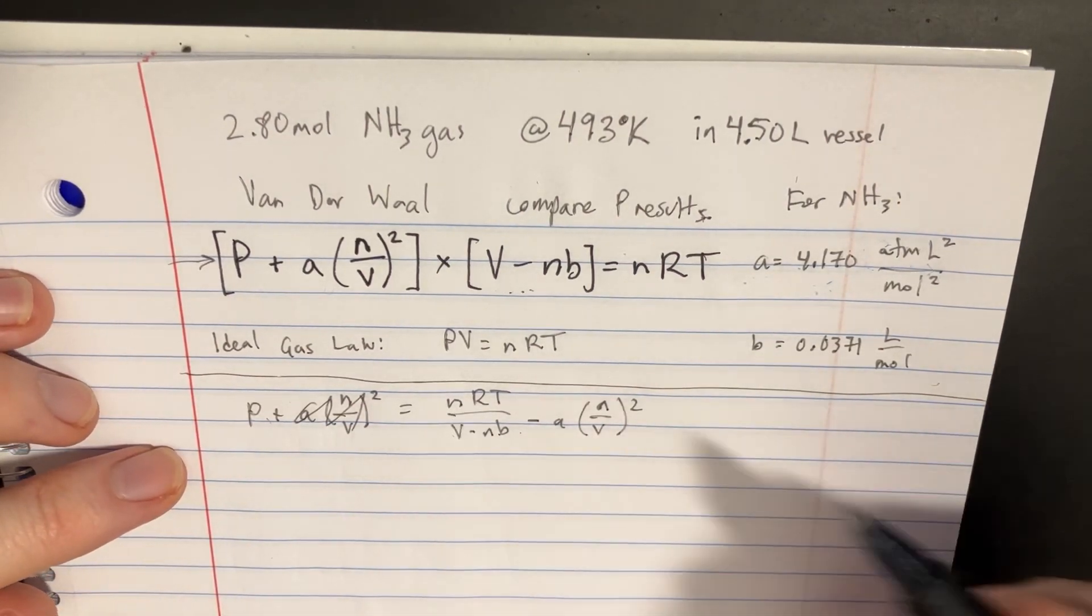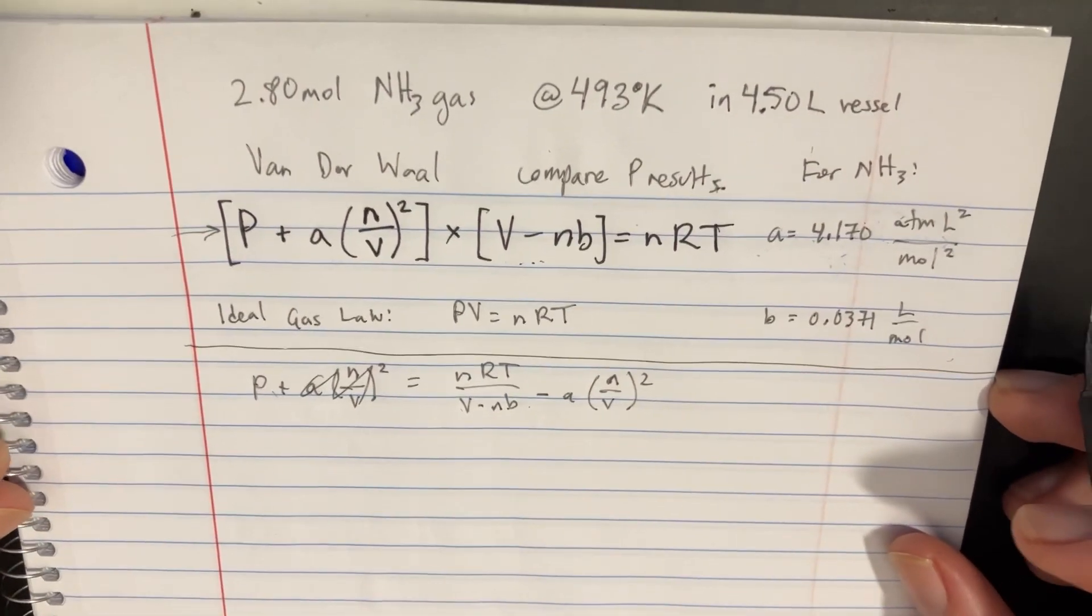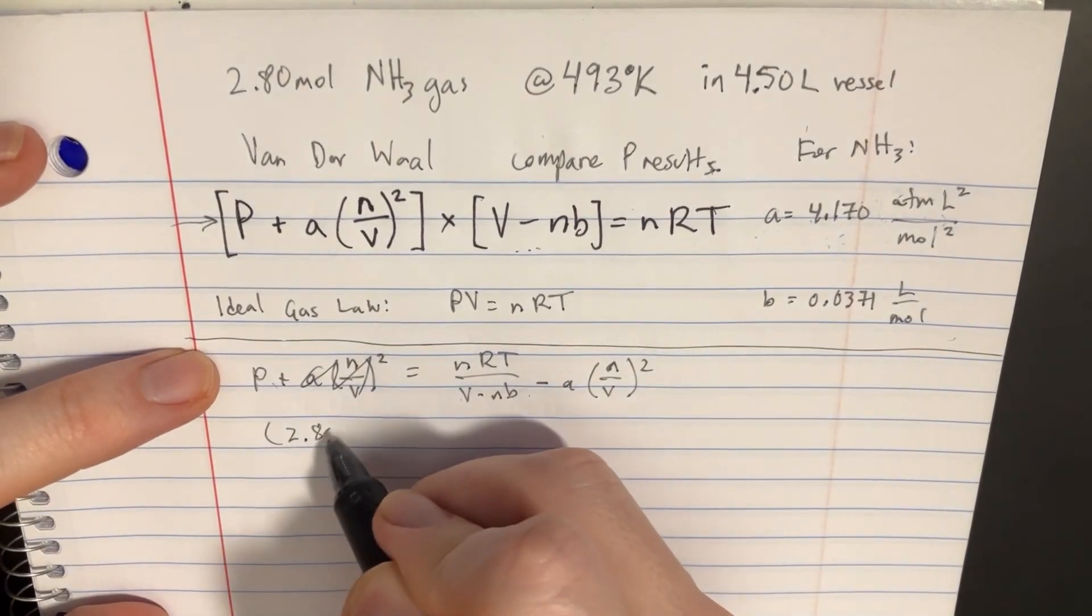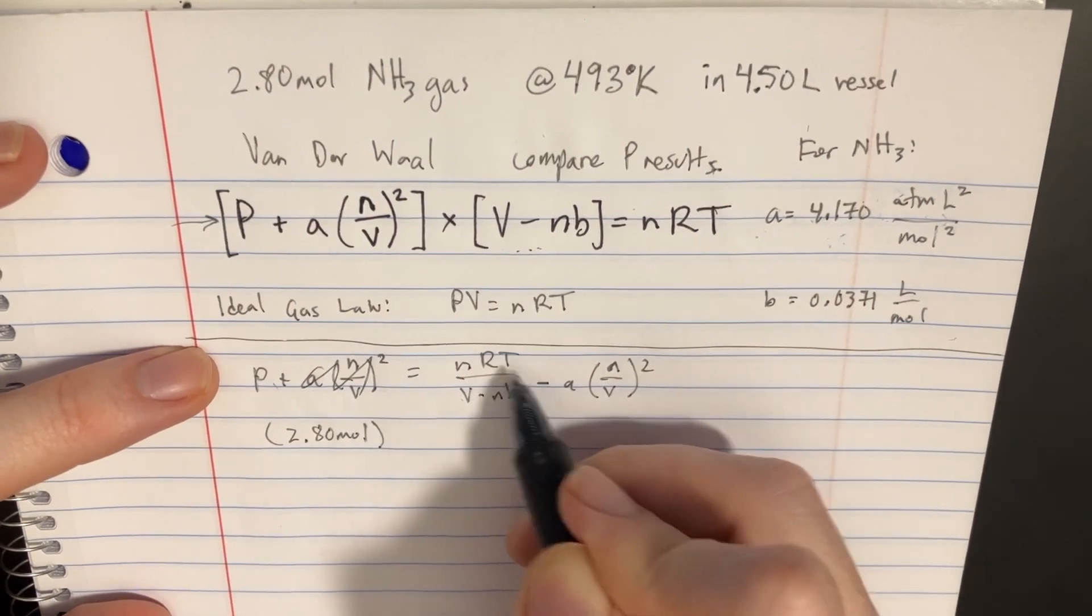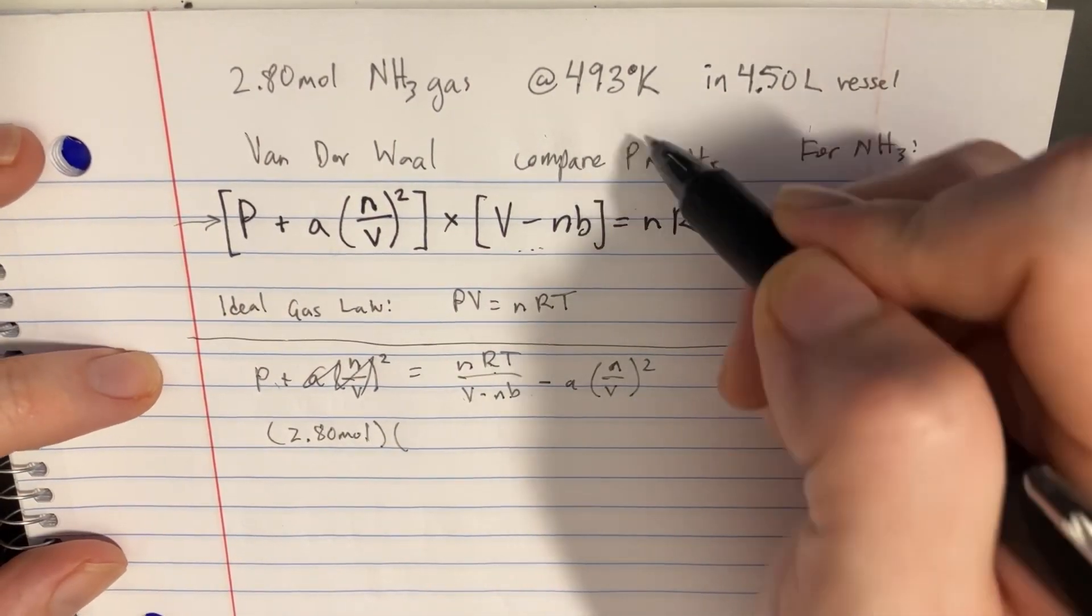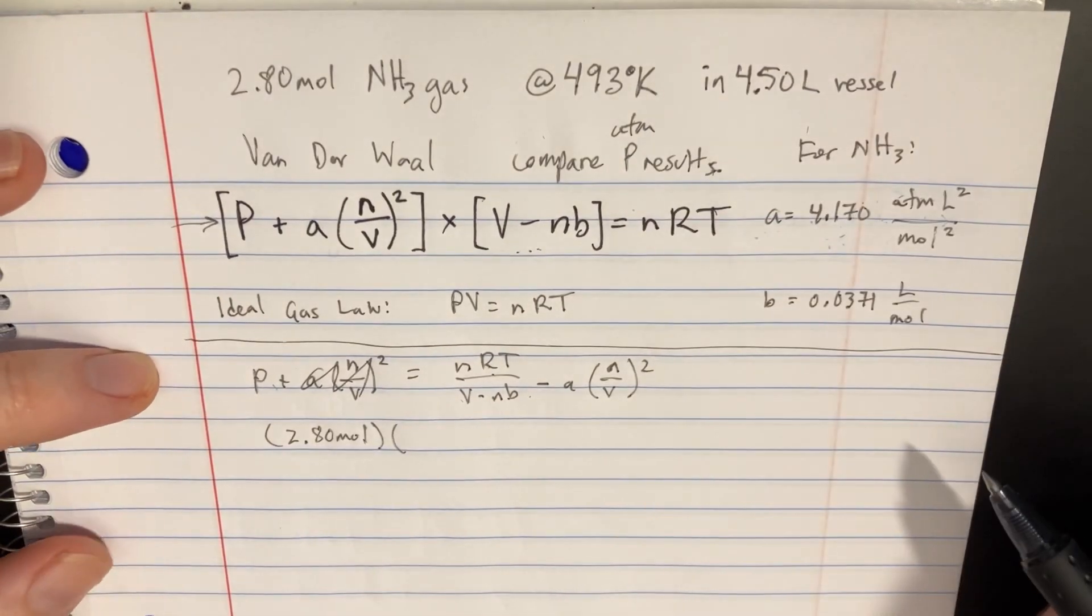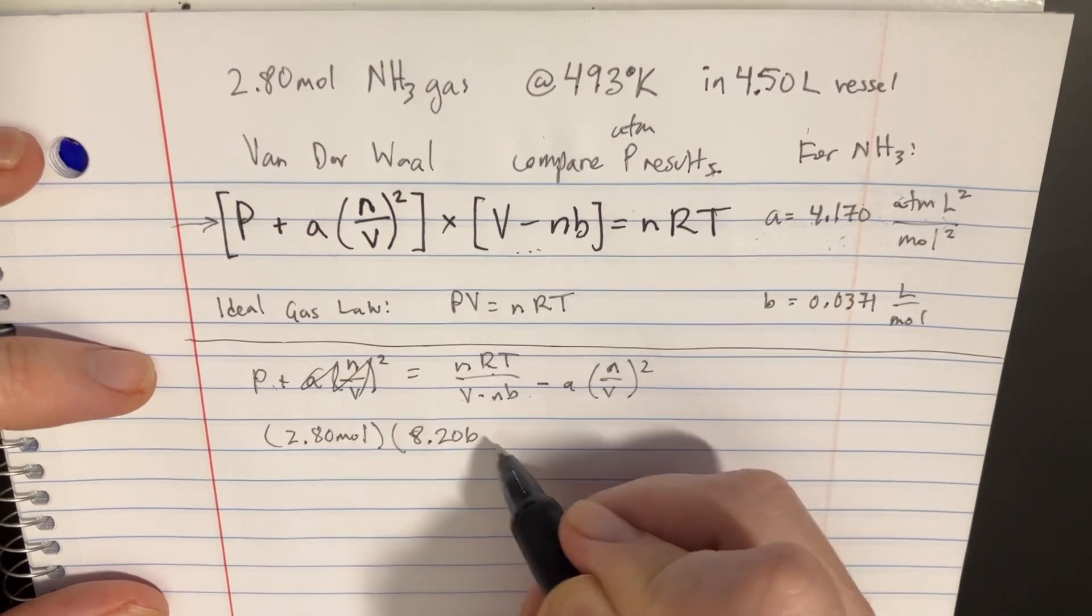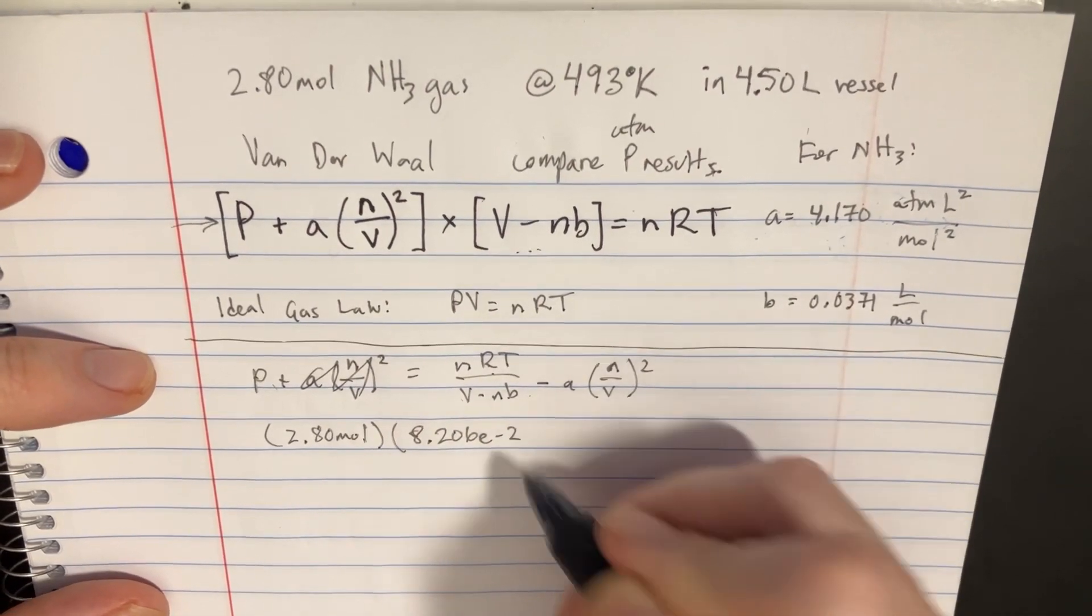So at this point, let's just start plugging in what we know. We're going to have n on the top here is going to be 2.8 moles. Then we have the R. Now we want the R that's specifically for ATM because we're going to figure out the ATM pressure. So we're going to use R being 8.206 times 10 to the negative 2.